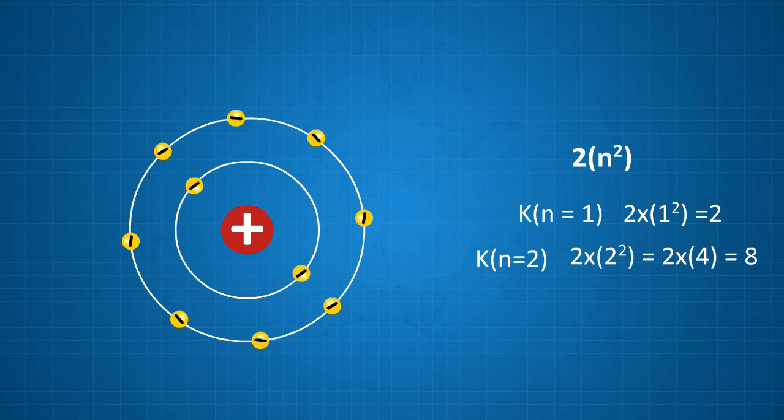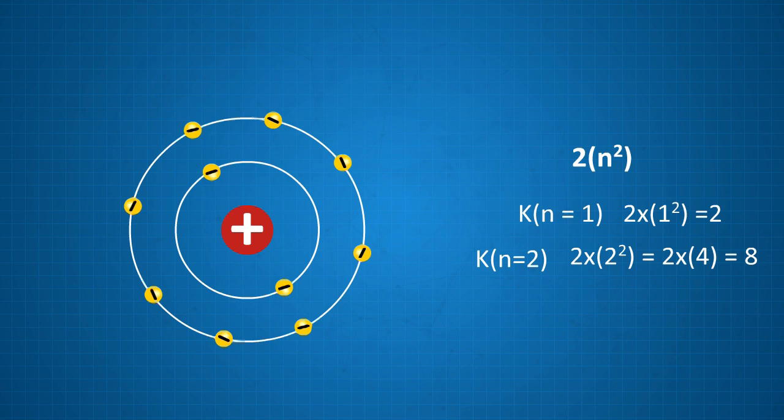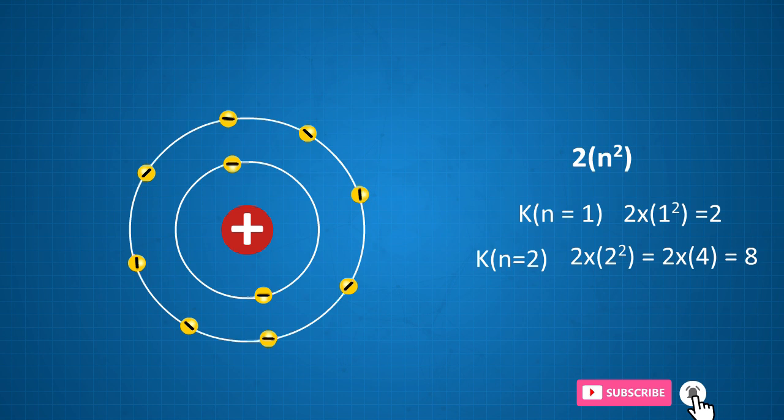So he concluded that the electrons revolved around a positively charged nucleus in fixed orbits. Even though the Bohr model was widely accepted and formed the base of several scientific innovations.